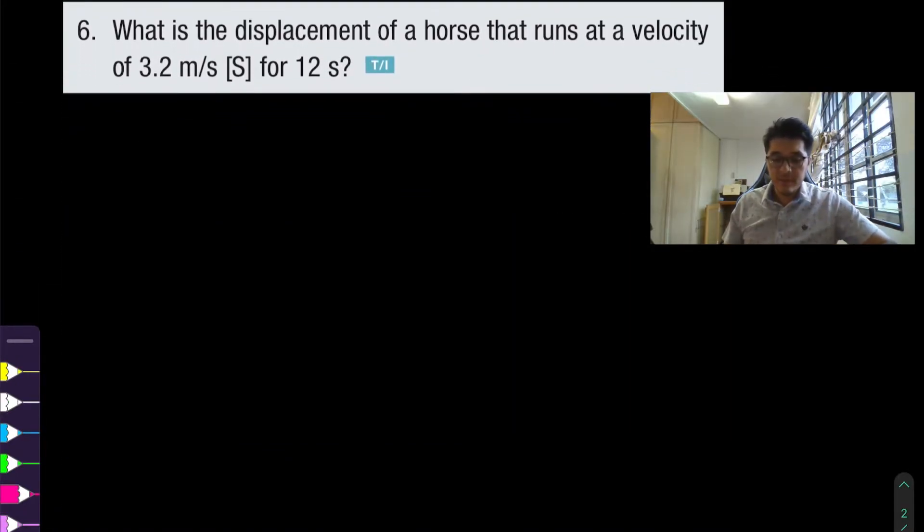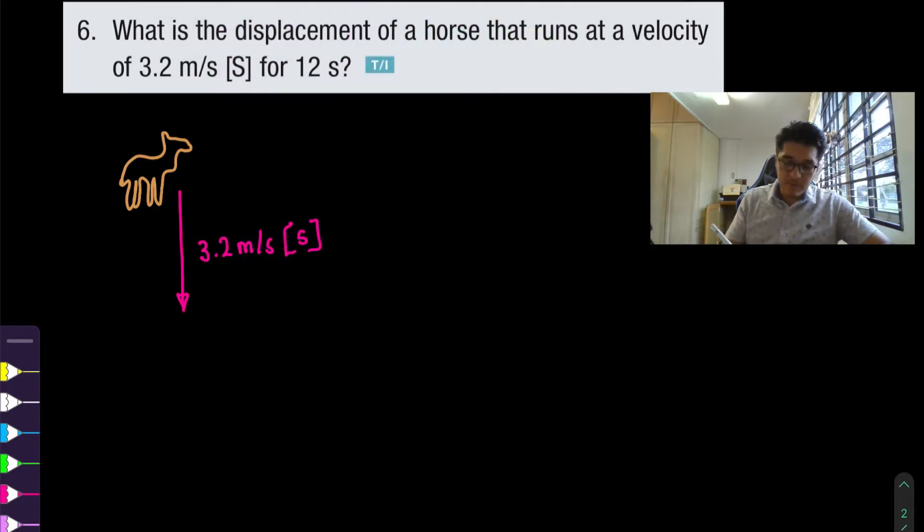For question number six we have what is the displacement of a horse that runs at a velocity of 3.2 meters per second south for 12 seconds? So let's draw our horse scene. And the horse is running in the southern direction with a velocity of 3.2 meters per second south. And it does this during a time interval of 12 seconds.